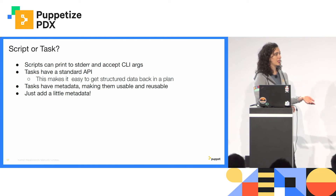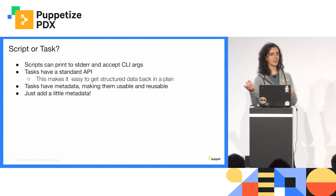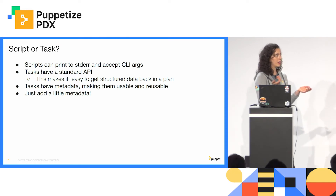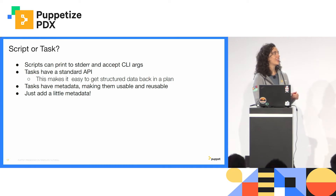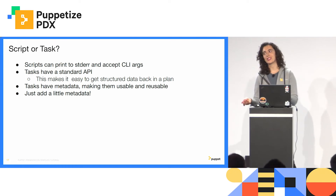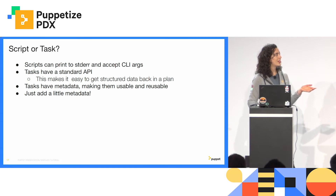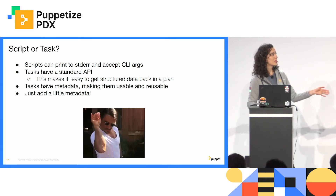Tasks make it easy to get structured data back out of them if you're using them in a plan, though if you're just running the script itself you might not need that. Tasks also have metadata which helps make them more usable and reusable — people who come across your task know what it does, what parameters it takes, how to use it. In Puppet Enterprise you can also enforce the types of your parameters so you don't have to do that type checking in the script itself.